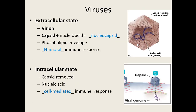An extracellular state means the virus is not inside a cell yet. These are viruses found out in the environment — the infective form. We also call them virions. When in this state, a virus is really only made up of two things: an outer protective capsid and the nucleic acid — whether DNA or RNA. Because it's made up of only a capsid and nucleic acid, we also call this whole structure a nucleocapsid.